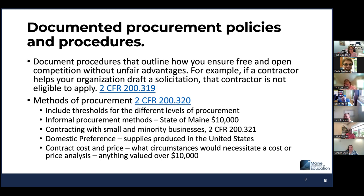The Uniform Grant Guidance defines levels of procurement in 2 CFR 200.320 as informal procurements, formal procurements, and non-competitive procurements. The informal procurement method means the agency may accept informal written quotes or bids for goods or services valued between $5,001 and $10,000. Non-federal entities must take steps to ensure that small and minority businesses, women's business enterprises, and labor surplus area firms are used whenever possible. Several strategies are required, so your organization must find the best ways to include them in their process.